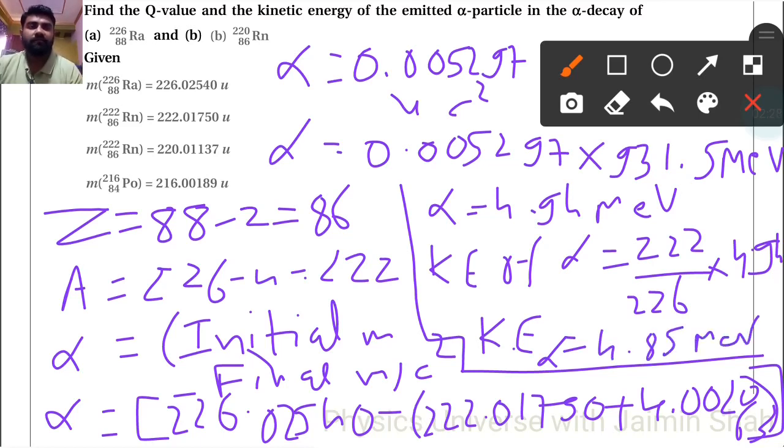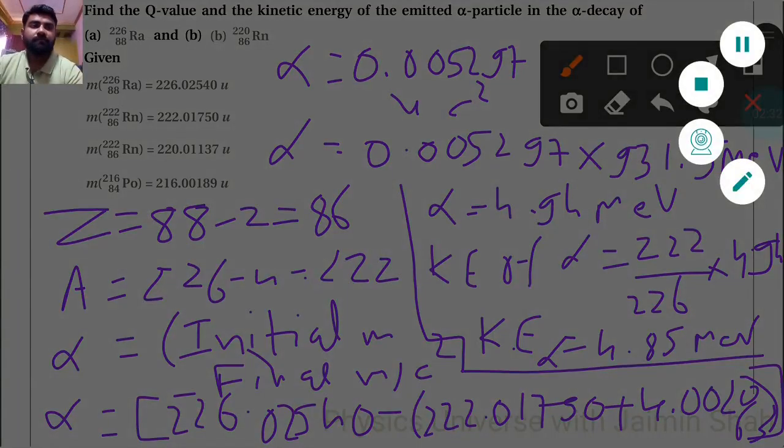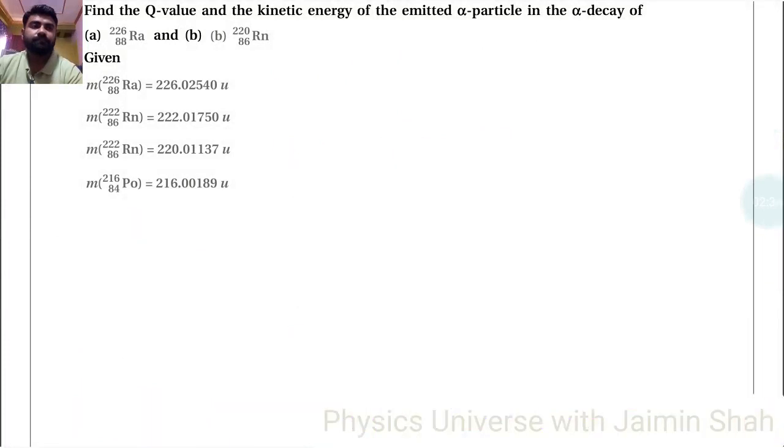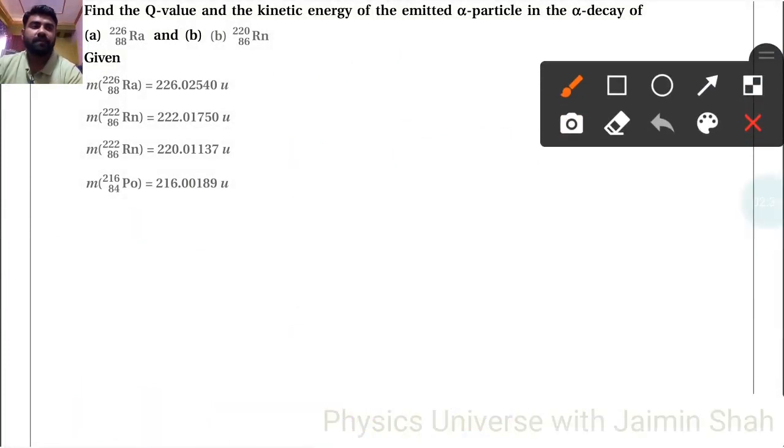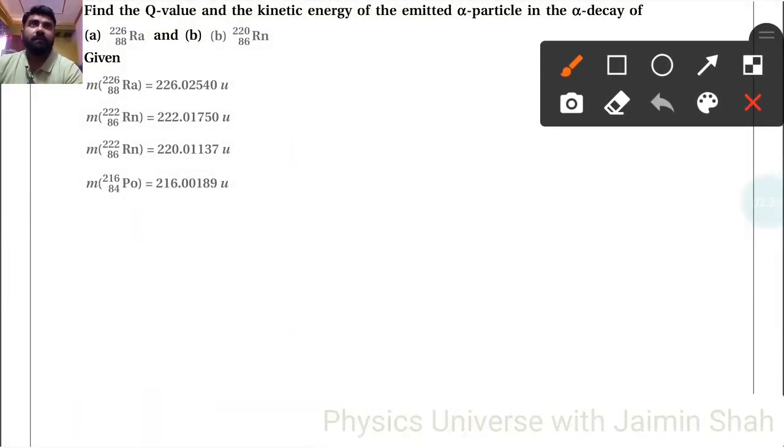That is the kinetic energy of the alpha particle. Now for the second question, we have radon-220 decaying to polonium-216.